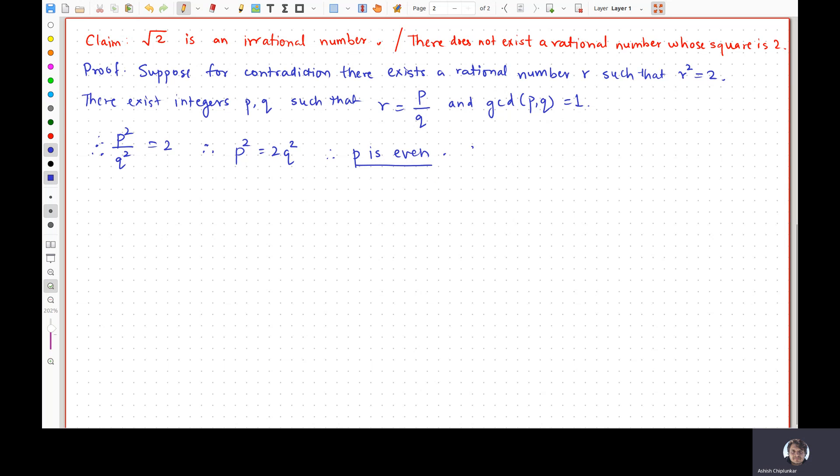Now, because P is even, therefore there exists an integer P prime such that P is equal to 2 times P prime. Let us substitute it over here. So therefore, P is 2 times P prime, so P squared is 4 times P prime squared is equal to 2 Q squared. Cancel a 2. What do you get? 2 times P prime squared is equal to Q squared.